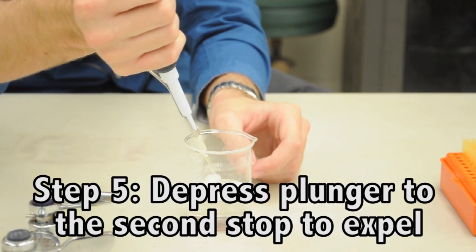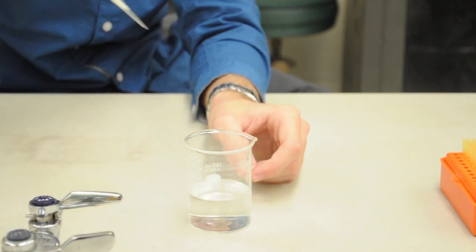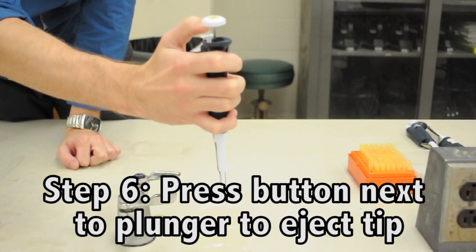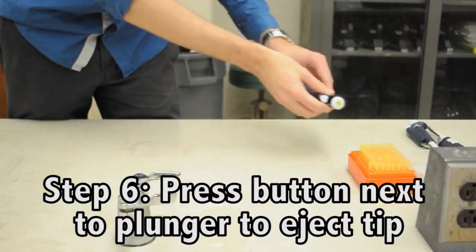You'll then depress the plunger to the second stop in order to expel everything. When you're finished, press the button next to the plunger to eject your tip.